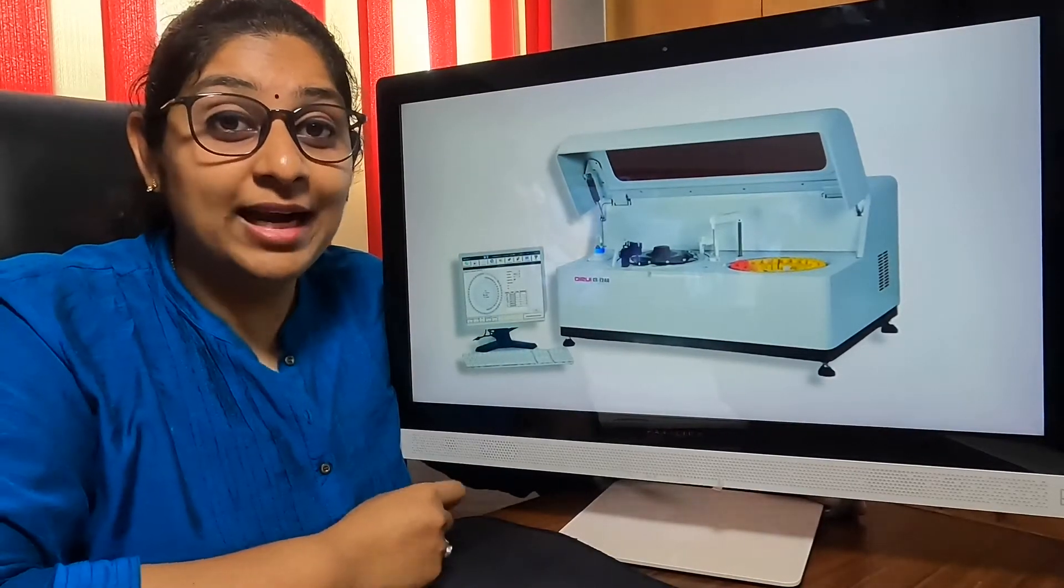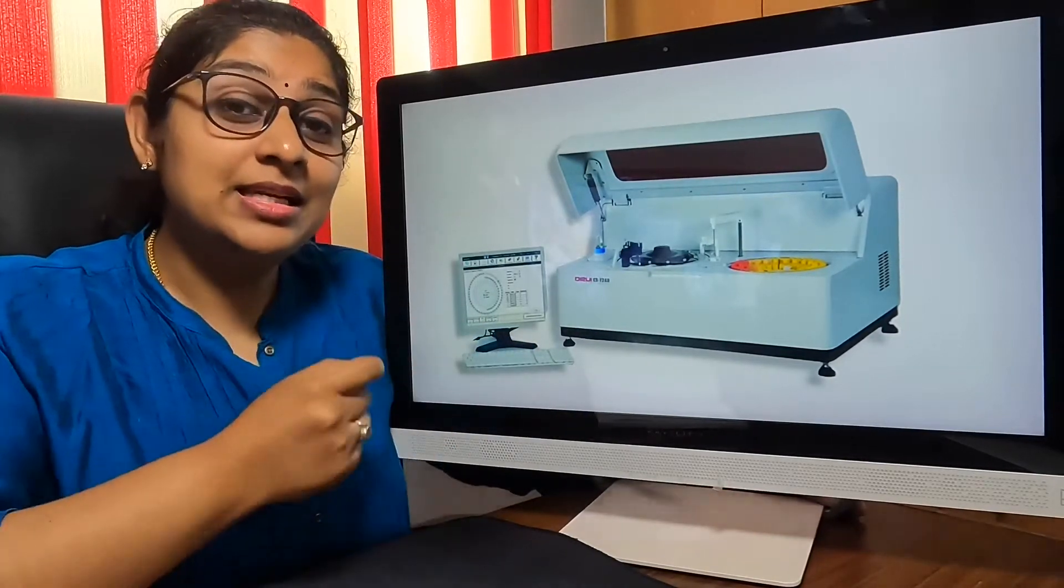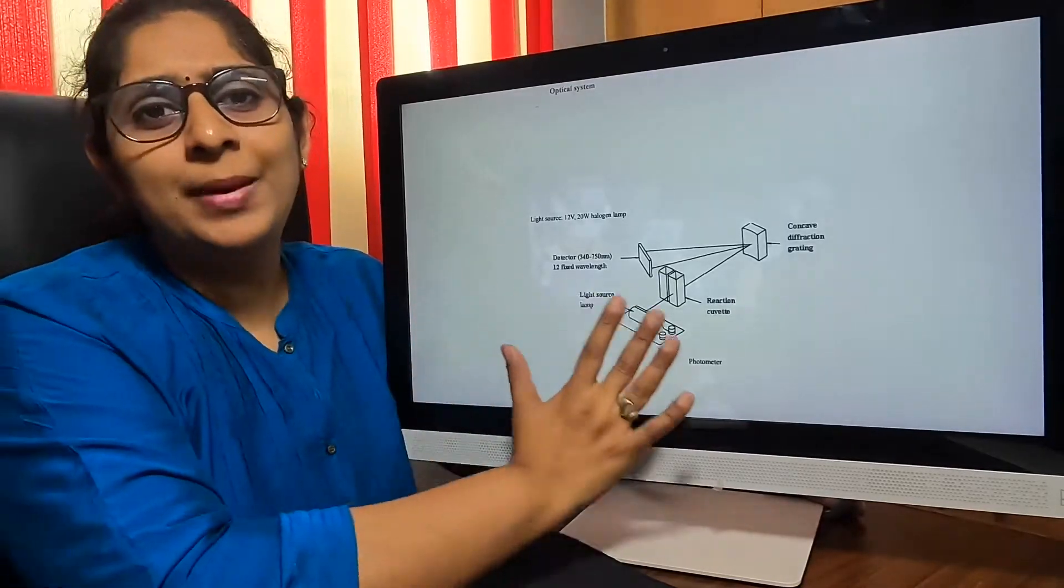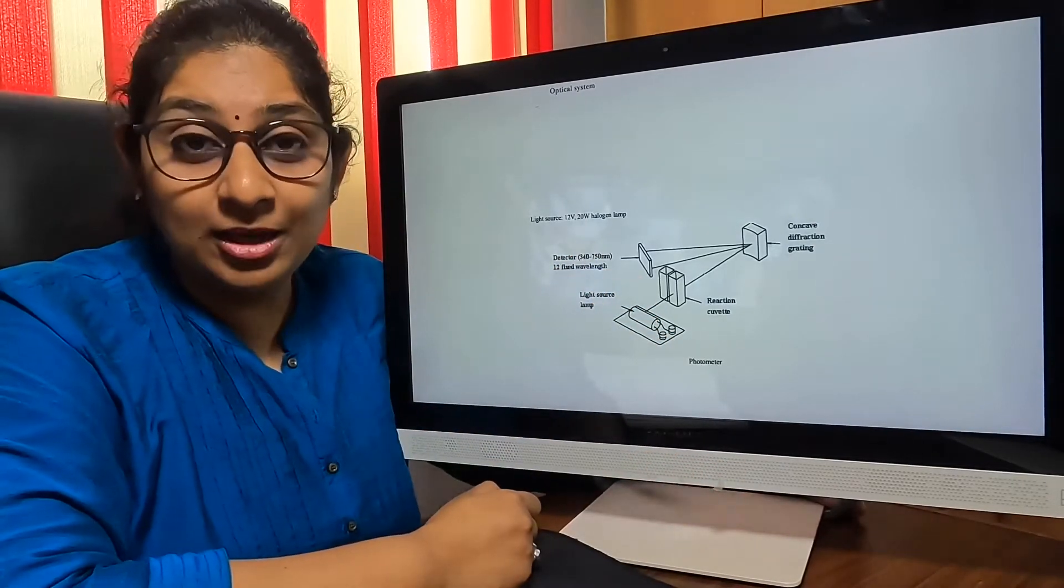More importantly, we have to note that this machine can simultaneously analyze about 60 colorimetric items at one go. This is the basic principle of the Durabi CST240 biochemistry analyzer.